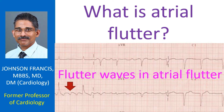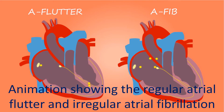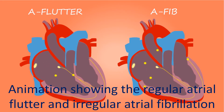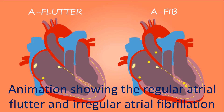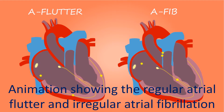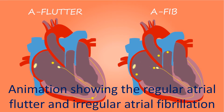Atrial flutter commonly arises from the right upper chamber of the heart, known as the right atrium. It can also arise from the left atrium sometimes. Though the rate in the upper chambers is typically around 300 per minute, the whole of it does not get conducted to the lower chambers. The AV node, situated in the junction between the upper and lower chambers, reduces the number of signals conducted to the ventricles.